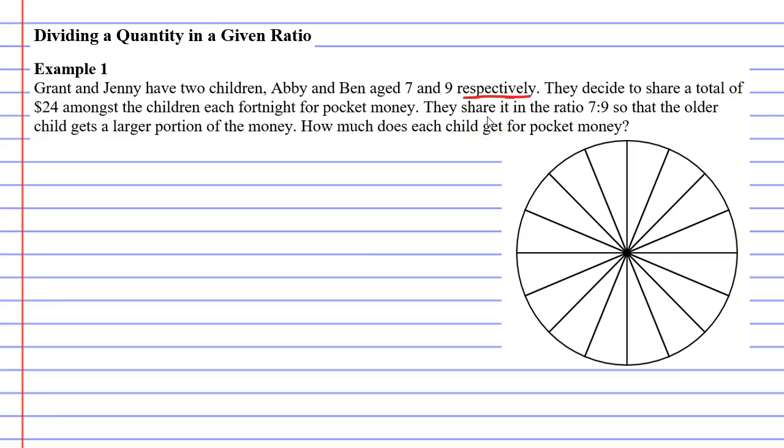What does respectively mean? It just means in that order. So Abby is the seven-year-old and Ben is the nine-year-old. They decide to share a total of $24 amongst the children each fortnight for pocket money.